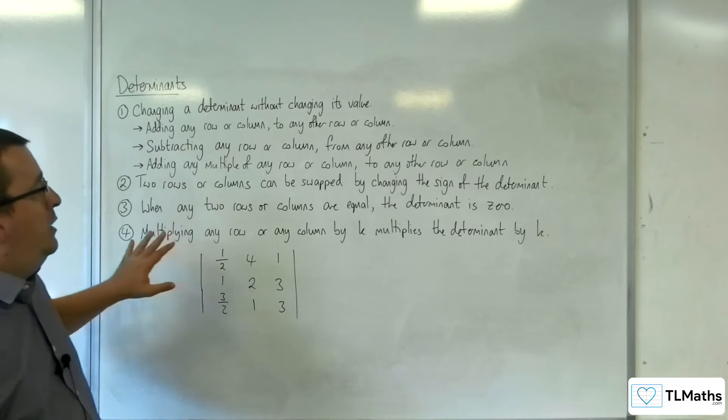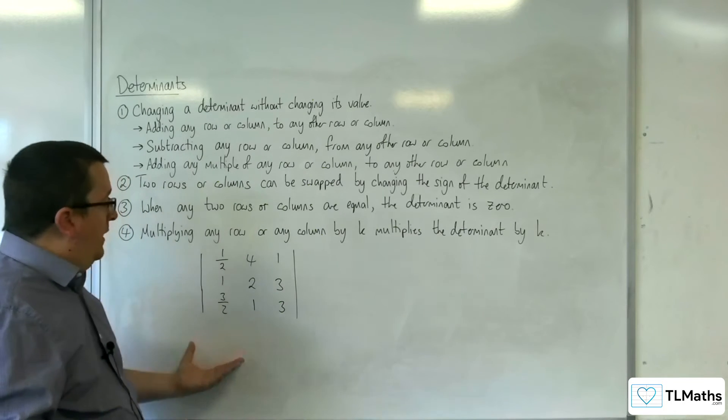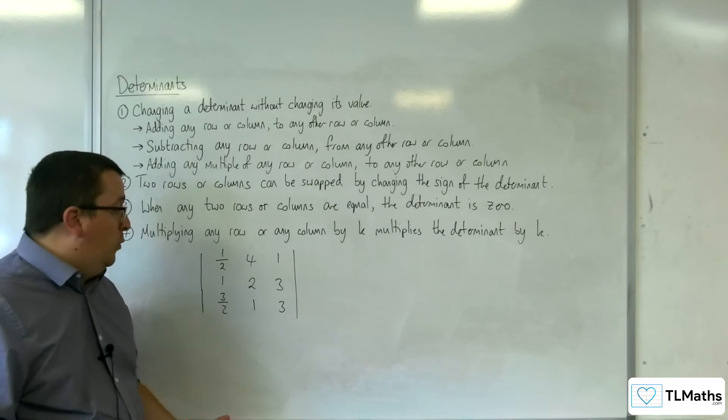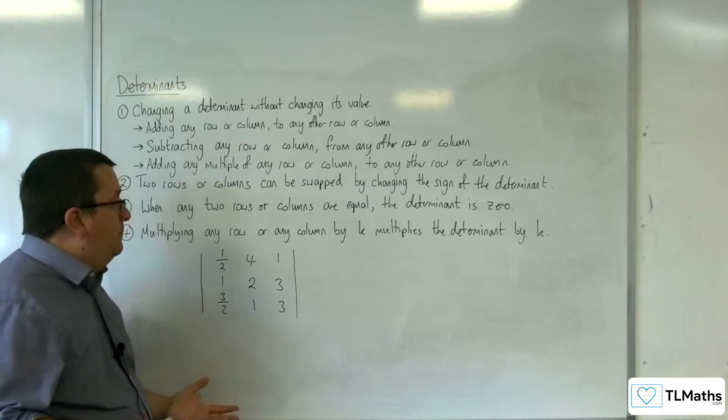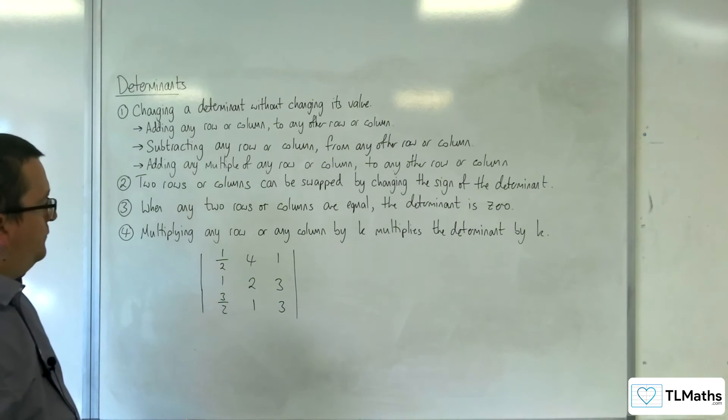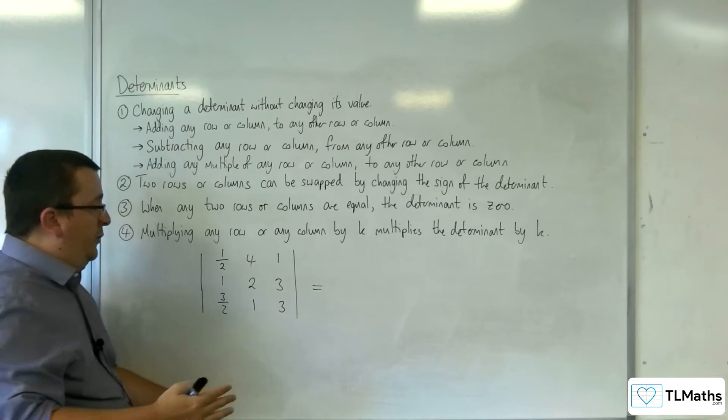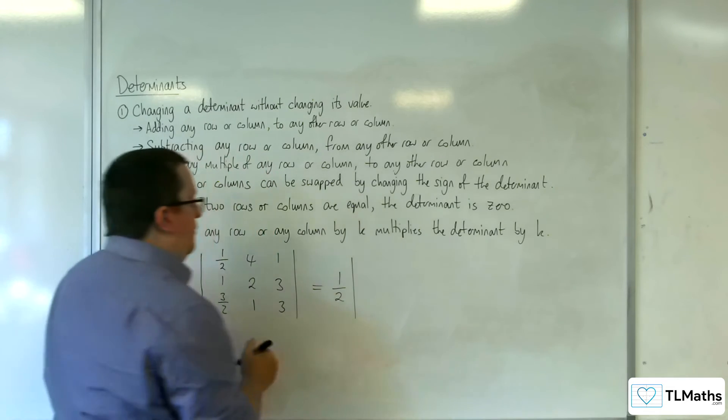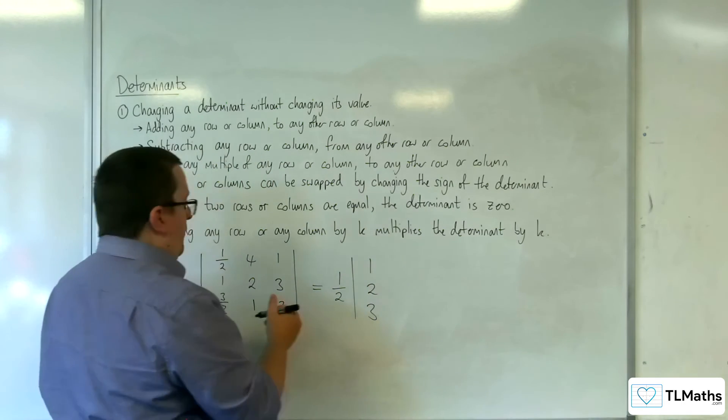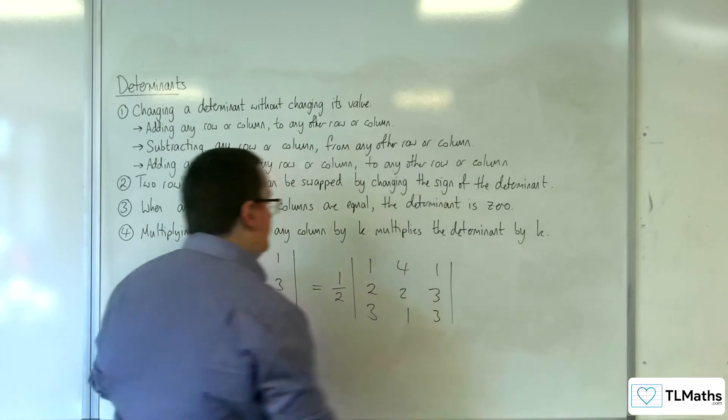Now, it can sometimes be useful to multiply a row or column through by a value, maybe to get rid of fractions, for example, like in this one. Maybe you want to multiply this column through by 2 to make the numbers nicer to work with. Now, you can perfectly well do that, but just be aware that that's going to multiply the determinant by the value as well. So if you want to, you can factor out the half from that first column, and so factoring out the half, you're going to get 1, 2, and 3 in that first column now, then 4, 2, 1, 1, 3, 3.